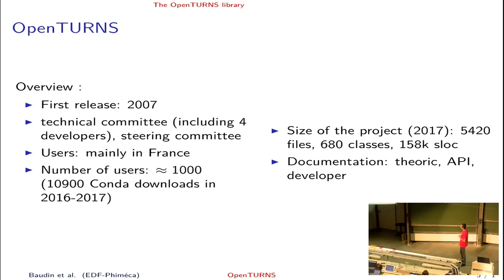This is a medium project, not large but medium, with 5,000 files, 700 classes, and approximately 100,000 lines of code. Obviously there is a need for documentation, so there are three kinds of documentation: the theory (that is mathematics), the API, and the developer documentation.